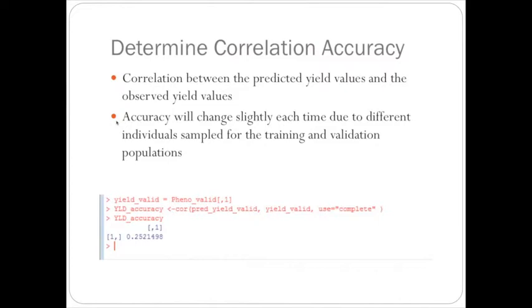So in order to determine the correlation accuracy, we use the core command. And I set the yield validation as the first column of the phenotype matrix that we put in before.